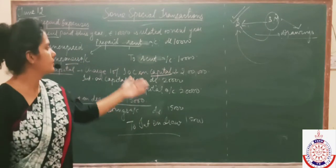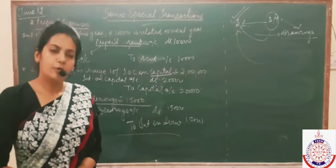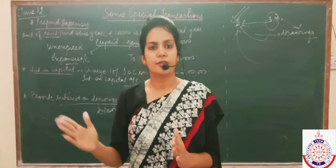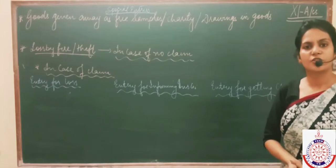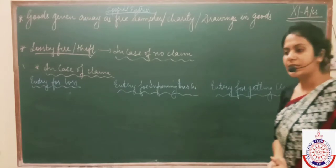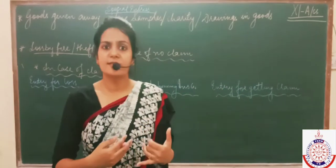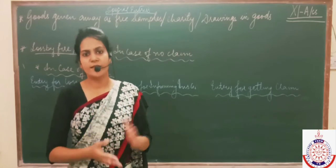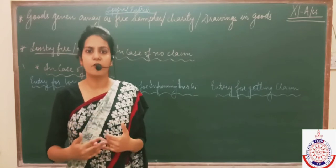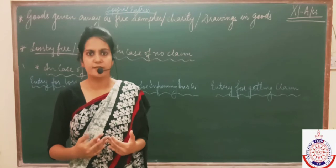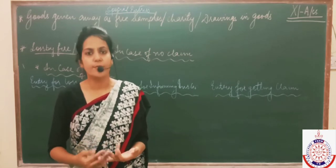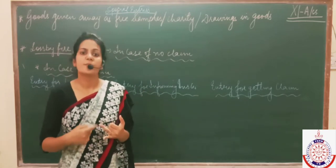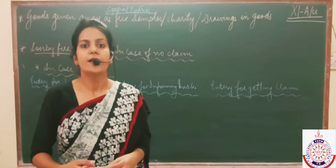These are important entries — understand their logic and they will be stored in your mind more clearly as you progress to further chapters. First concept: goods given away as charity or free samples. At times a businessman gives goods in the form of charity to outside people, which becomes an expense for the business because we are giving goods without receiving cash in return. Similarly, sometimes the business gives goods as free samples.